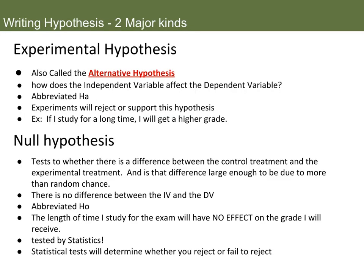When you are running an experiment, you are going to have a hypothesis. There are two types of hypotheses in AP Biology. The experimental hypothesis is your normal hypothesis — also called the alternative hypothesis. It basically tests how the independent variable affects the dependent variable. We abbreviate the experimental hypothesis as H-A, where A stands for alternative hypothesis. Your experiment will either reject or support the hypothesis. For example: if I study for a long time, then I will get a higher grade. That is a testable experimental hypothesis — the independent variable is the amount of time I study and the dependent variable is the grade.